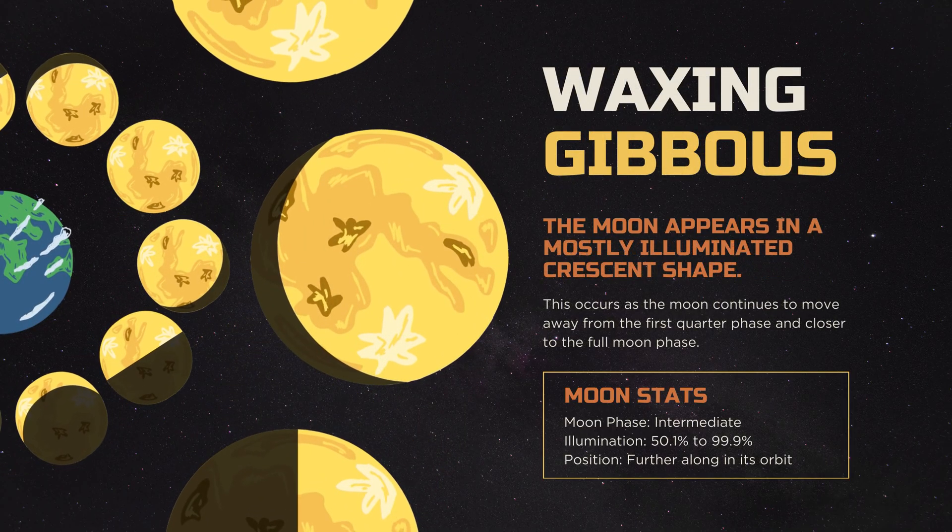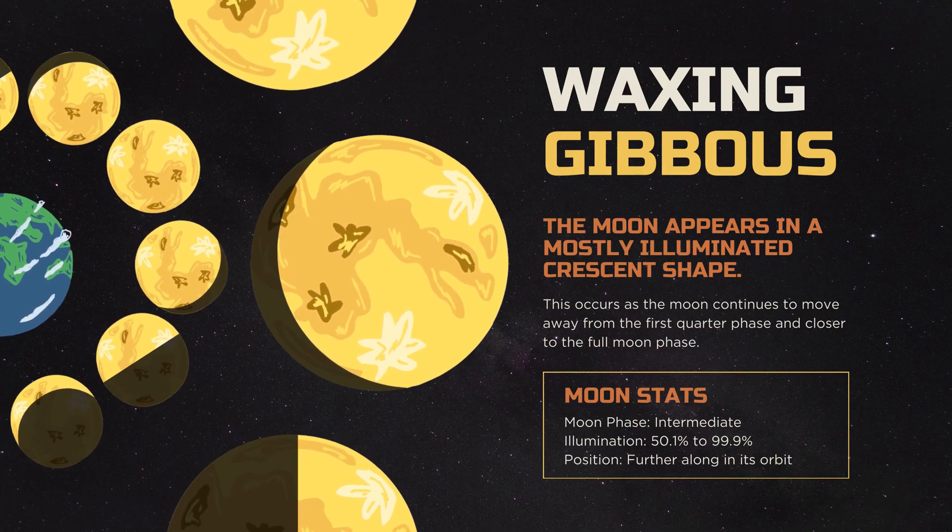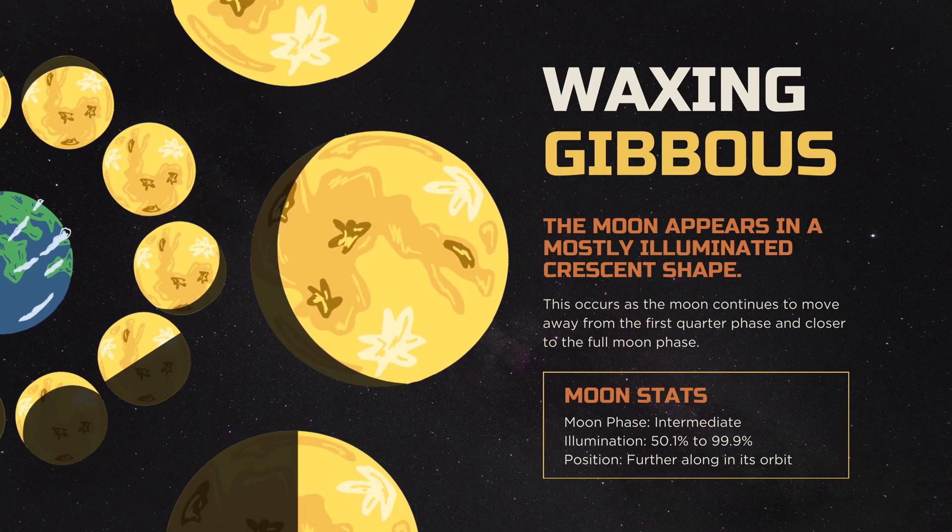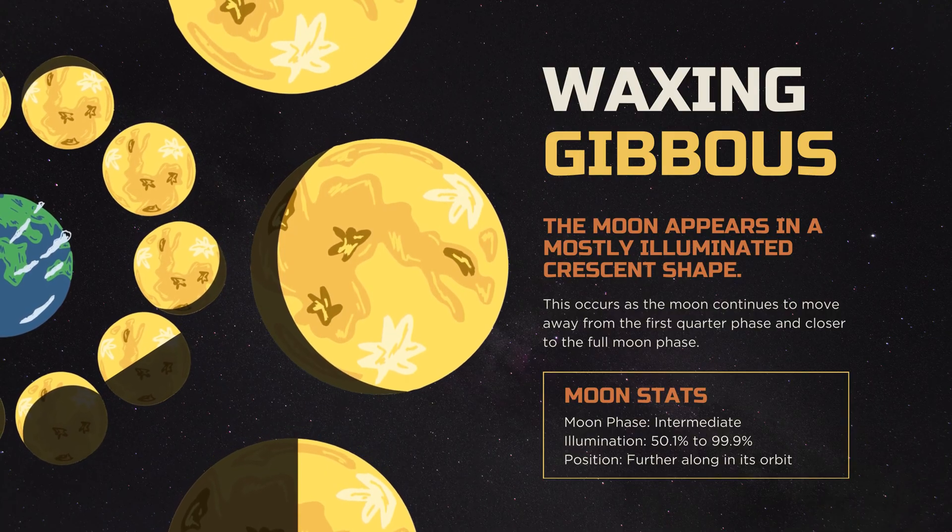The waxing phase concludes with the waxing gibbous, where the Moon appears mostly illuminated, growing ever closer to the full Moon phase. Waxing gibbous moons are visible in the sky during the afternoon and evening hours.